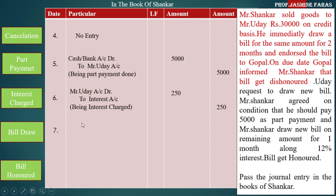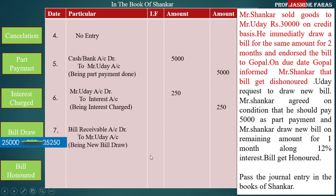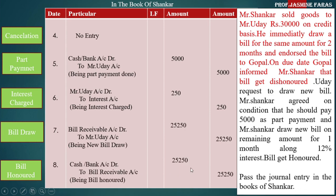Draw a new bill: bill receivable account debit to Uday account — the amount is remaining 25,000 plus interest 250, so 25,250. If noting charges had been given, we would add those too. Being new bill drawn for 25,250. Finally, bill gets honored: cash account debit to bill receivable, 25,250, being bill honored.